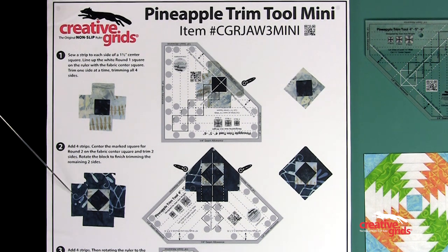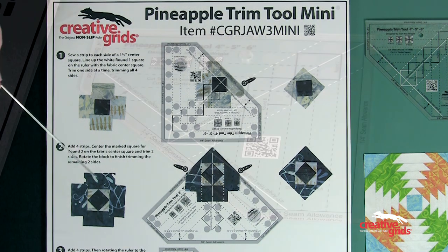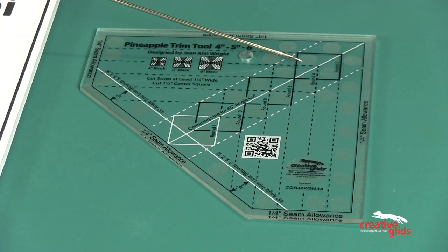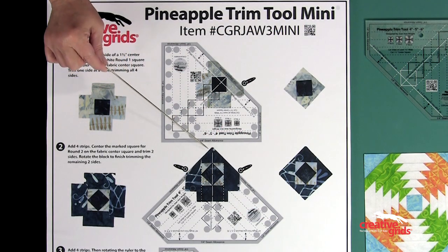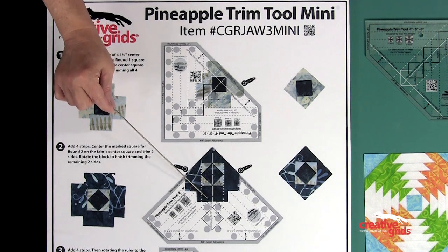For round two, add four strips and press. Rotate the ruler and look for the black square labeled round two. Center that square on the block square and trim two sides. Rotate the block to finish trimming the remaining two sides.